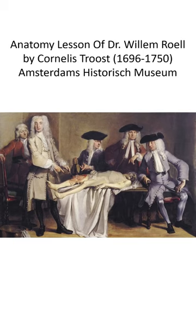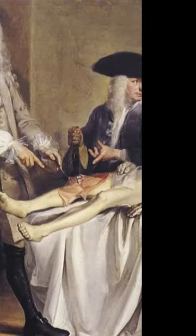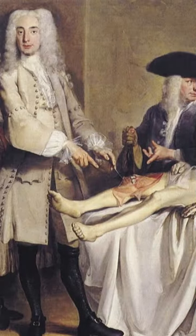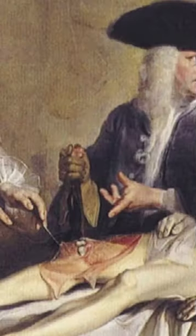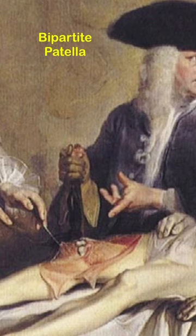How would you describe the patella in the painting? It's called the Anatomy Lesson of Dr. Willem Rowell. A closer look here shows that the patella is in two pieces. This is what we call a bipartite patella.